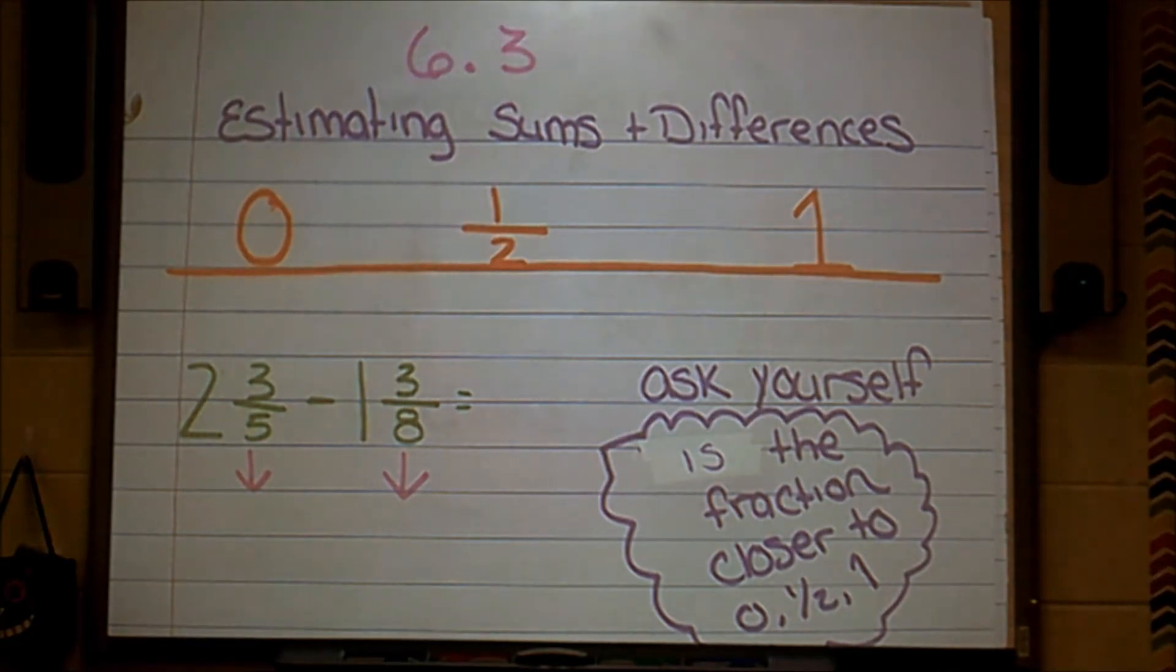So we're going to be using this number line here that I've drawn for you, and we're going to look at fractions, and we're going to determine whether that fraction is closer to 0, 1 half, or 1 whole. Those are going to be the benchmarks that we use to round our numbers or estimate our fractions, and then we're going to add or subtract depending on the operation.